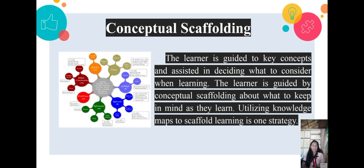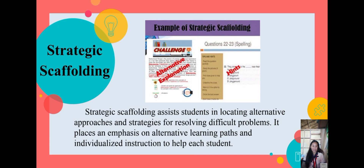The third type of scaffolding is strategic scaffolding. Strategic scaffolding assists students in locating alternative approaches and strategies for resolving difficult problems. It places an emphasis on alternative learning paths and individualized instruction to help each student. In addition, strategic scaffolding necessitates knowledge of learners' individual learning styles and levels of prior knowledge. A strategy for simplifying and organizing information may also be required, as well as frequent communication with students. An example of this is alternative explanations and hints.